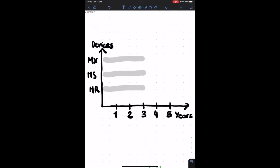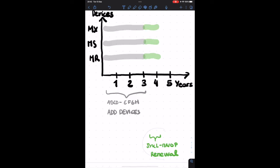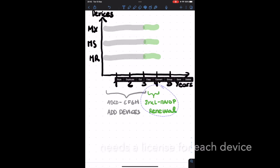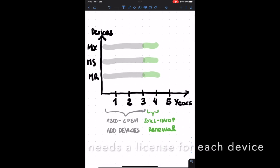Now what's the difference between add devices and renewals? Let's say I have an organization which co-termination expiration date was in three years, and I have arrived to the end of those three years. What we need to do is get a renewal license. What it is, is just a key that I'm going to add to renew all of my devices.